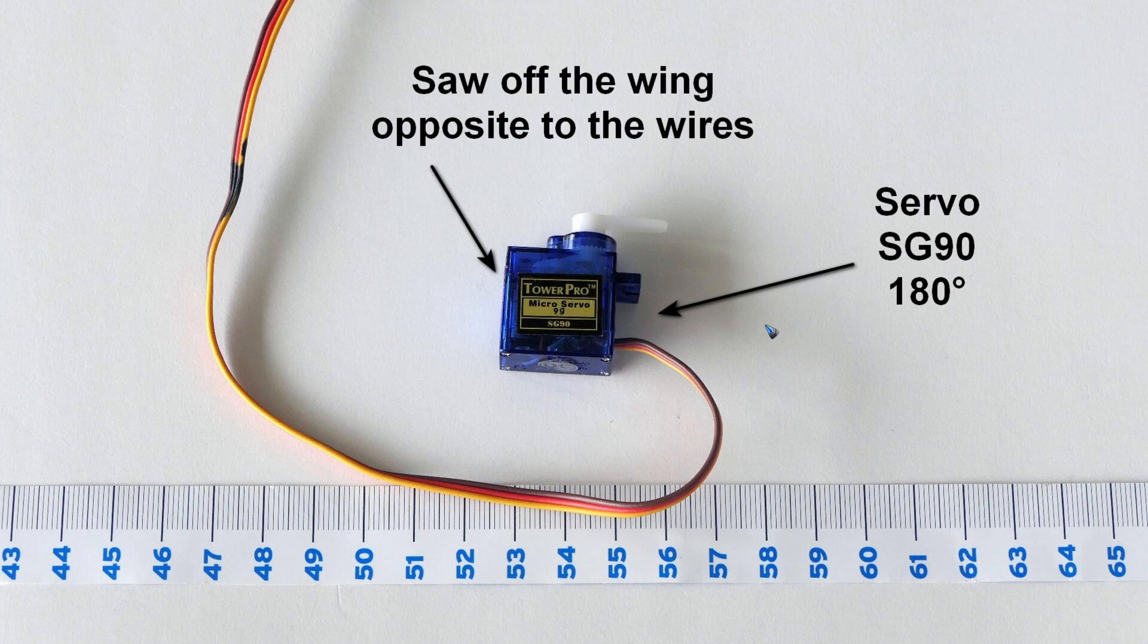The strange thing with these servos is, even while the code number is the same, sometimes they are 90 degrees and sometimes they are 180 degrees. And unfortunately, this is not always mentioned in the specifications. I prefer the 180 degrees because then I have a little bit more room to maneuver.